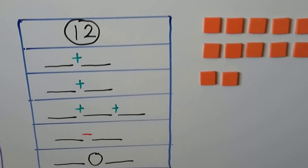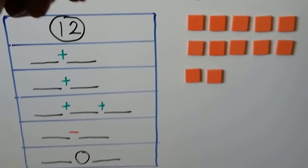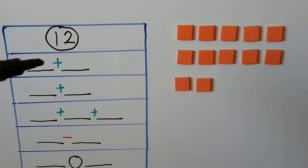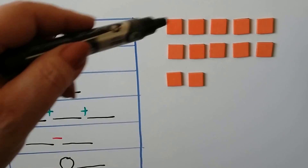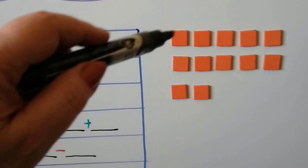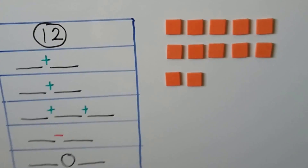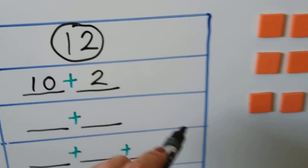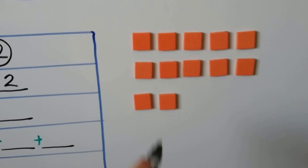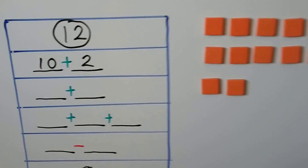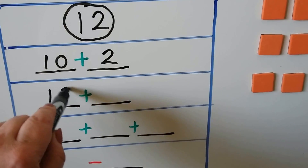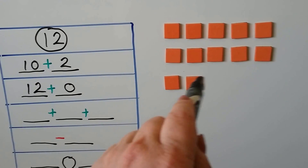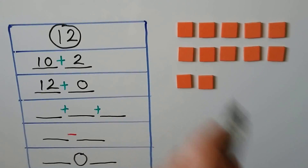In this table, we need to find ways to make 12. Here I have 12 counters — 10, 11, 12. We need to think of an addition sentence. We can group the counters and say 10 plus 2. We could also say 12 plus 0 — if we add 0 counters, that means we're not adding any, so it stays 12.